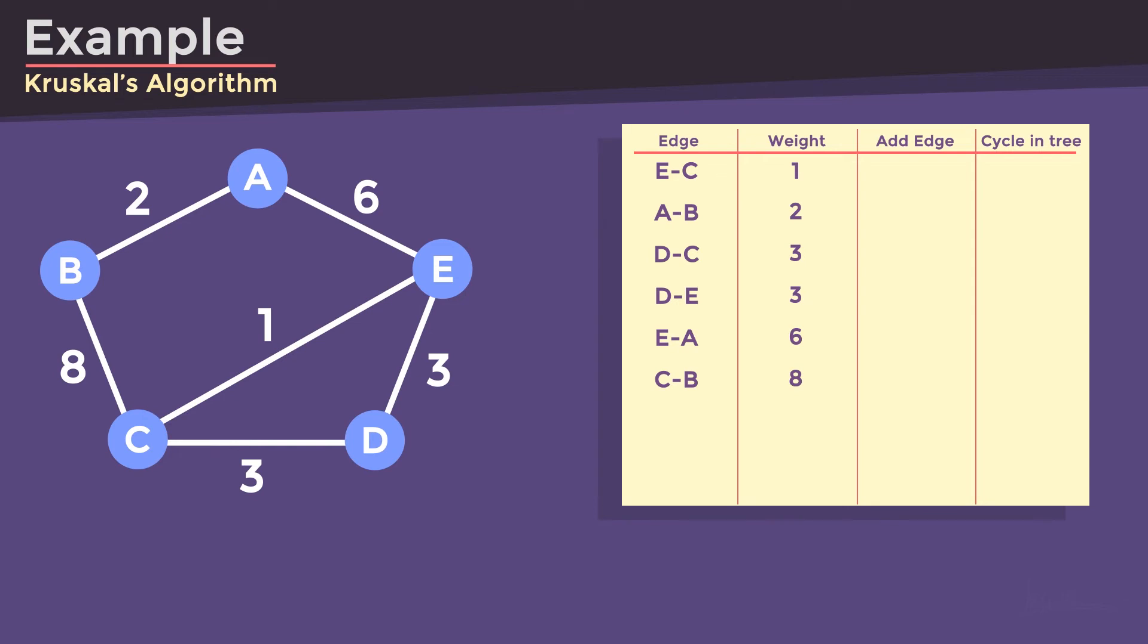And now this is the time to pick the smallest edge among all until there is no cycle. The first edge that we are going to choose is EC that connects two nodes. The next one is AB and there is still no cycle.